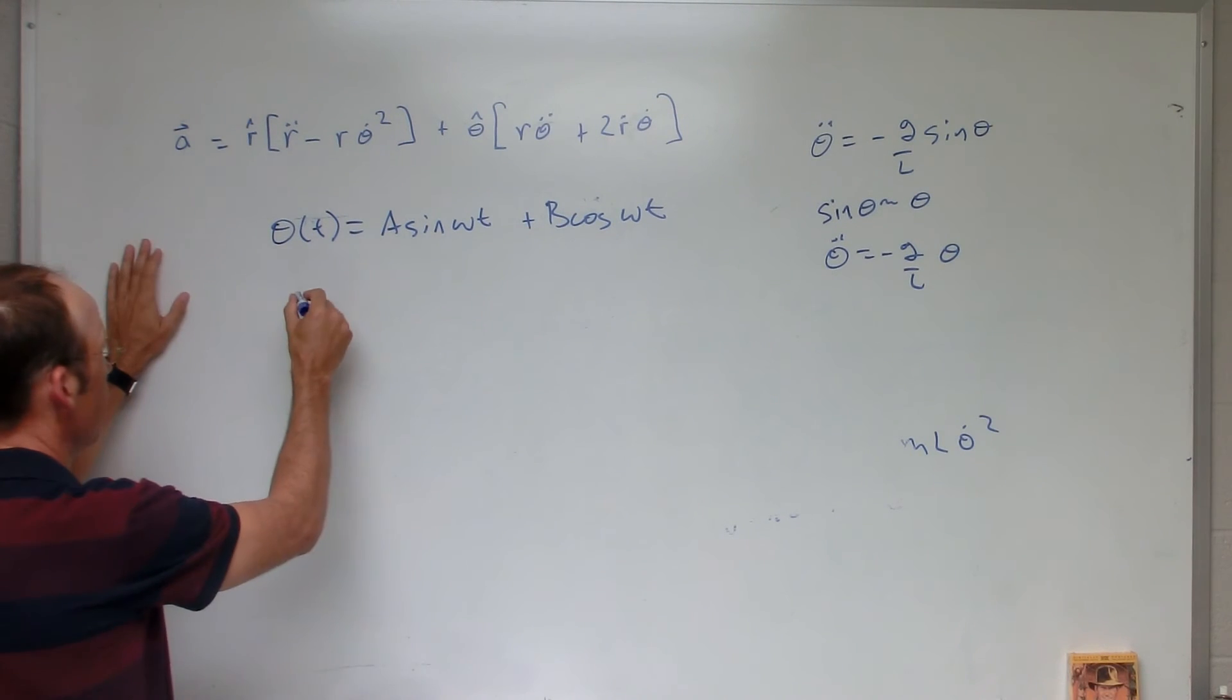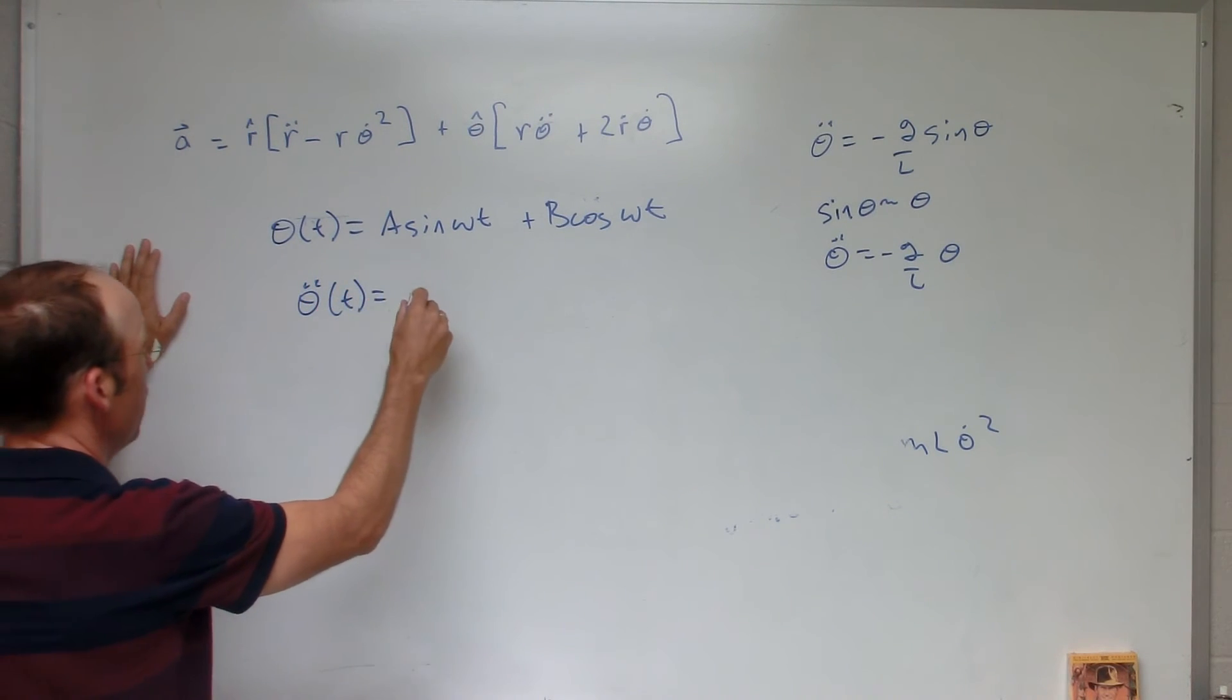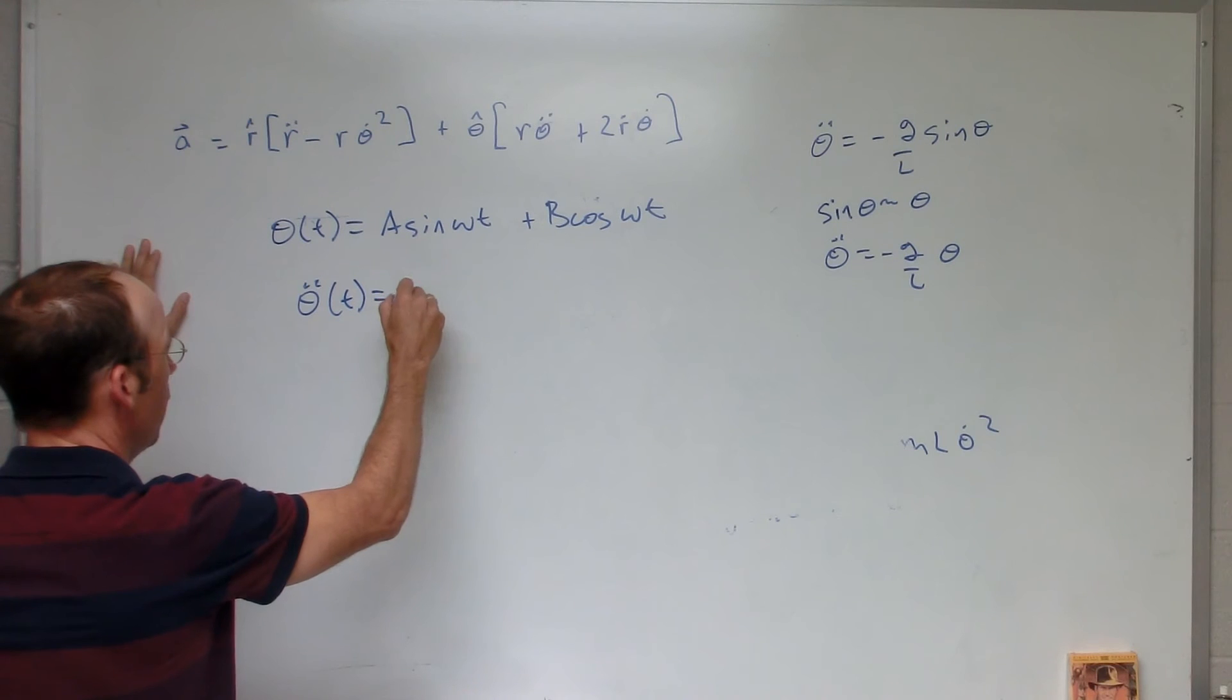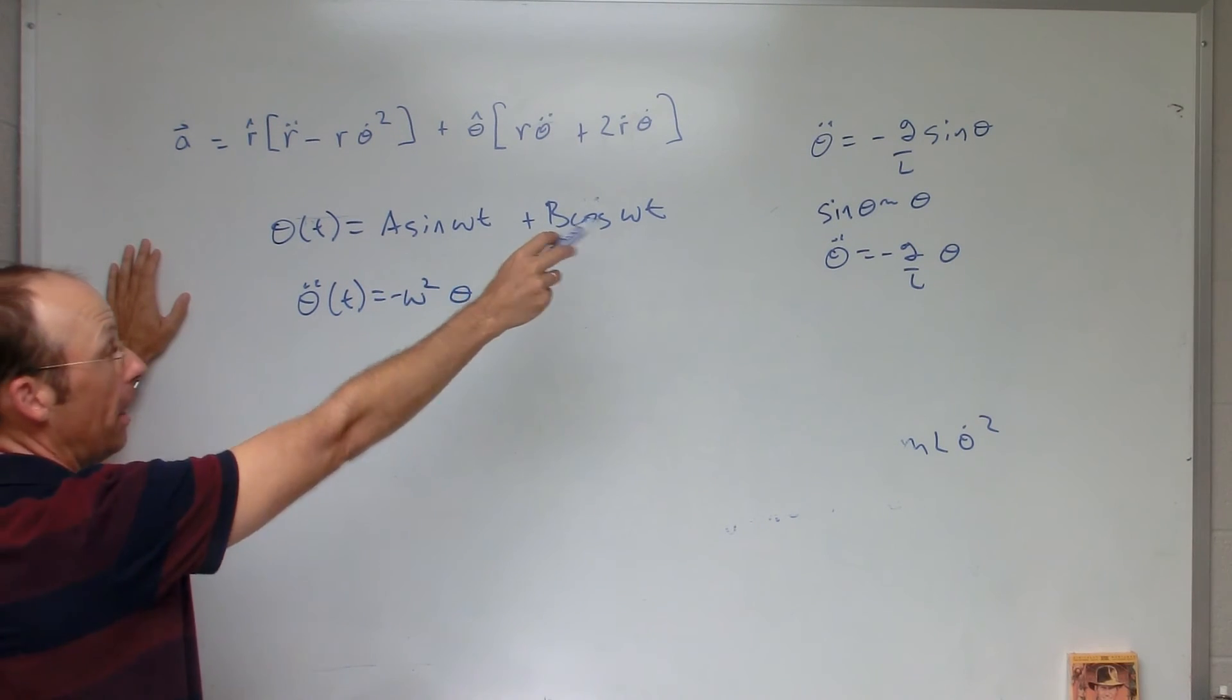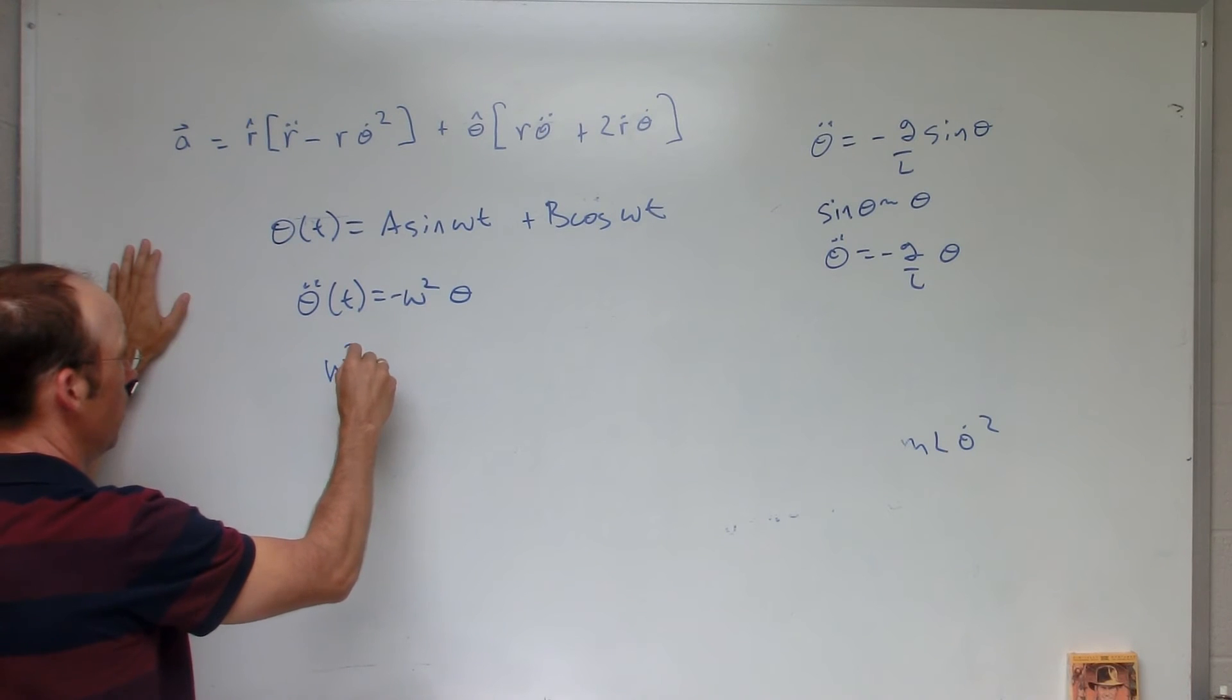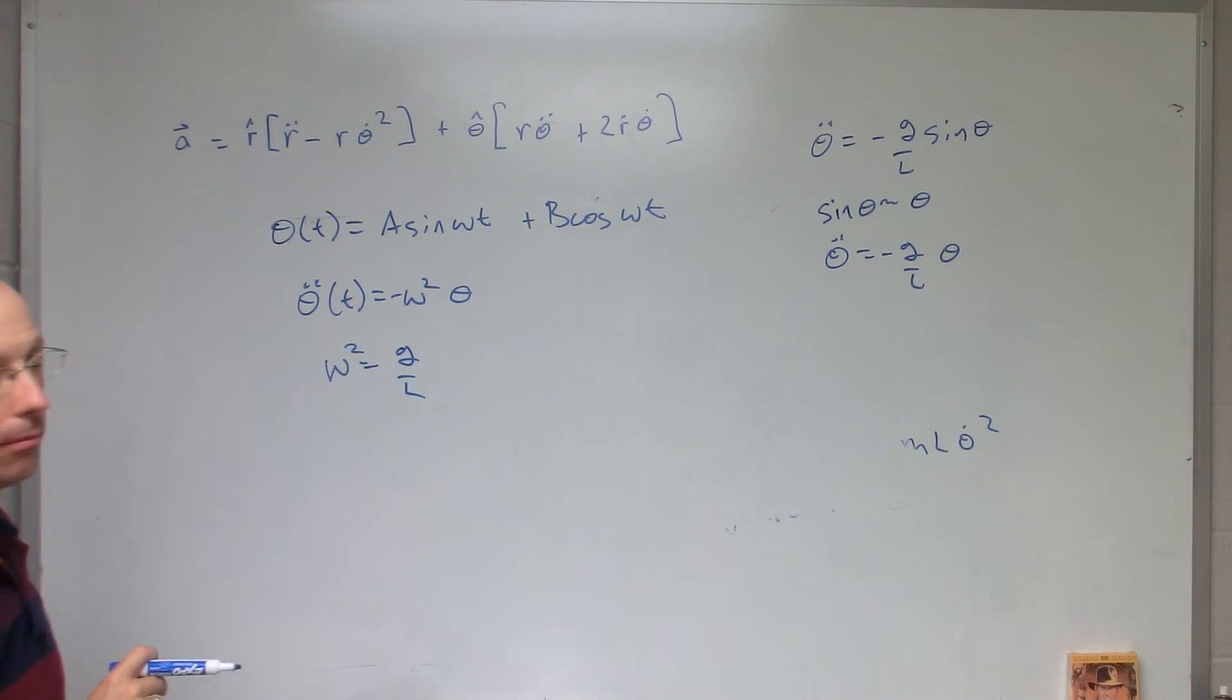So if I take the derivative of this twice, I get theta double dot of t is going to be equal to negative omega squared theta. So that means that omega squared has to be equal to g over L. Yeah. I did it right the first time. I always get that backwards. I don't know why.